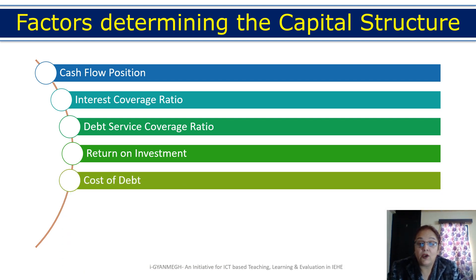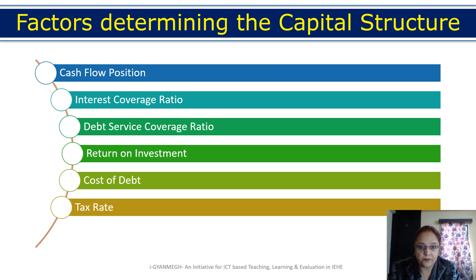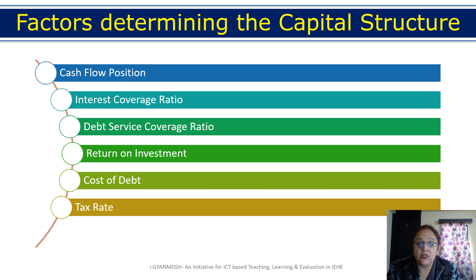The next factor is the cost of debt. If the cost of debt is lower, we can issue more debentures in our capital structure. Then comes the tax rate — if the tax rate is higher, we can issue more debentures, because interest paid to debenture holders is tax-deductible, reducing the effective cost of debt.